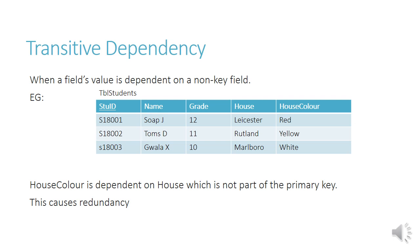A transitive dependency is when a field's value is dependent on a non-key field. Remember a field is a column, and if you've got any field in a table that is dependent on another field that is not actually the primary key, that dependency is called a transitive dependency.